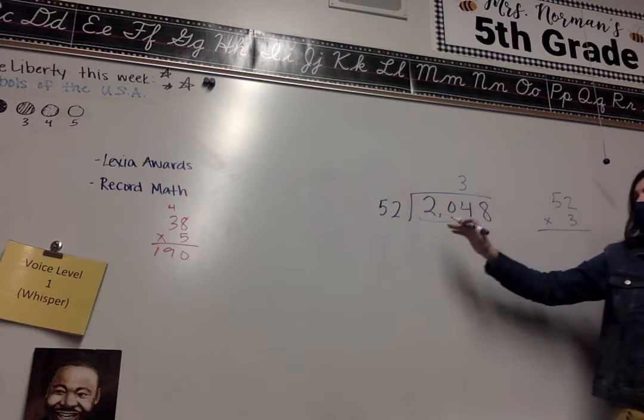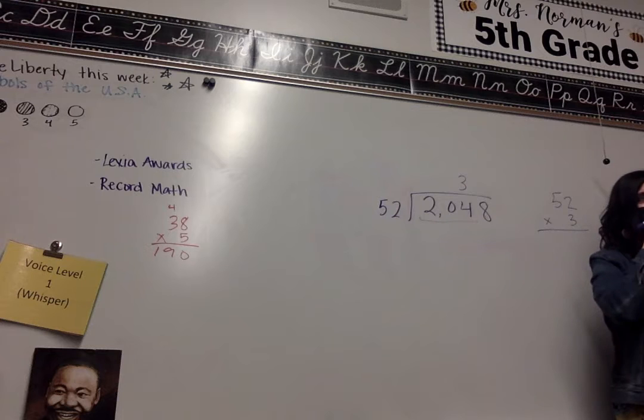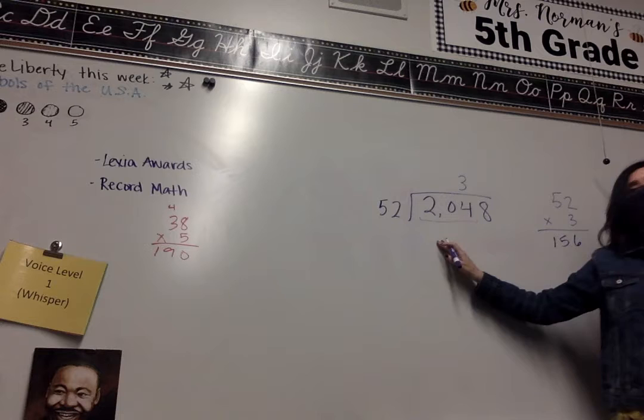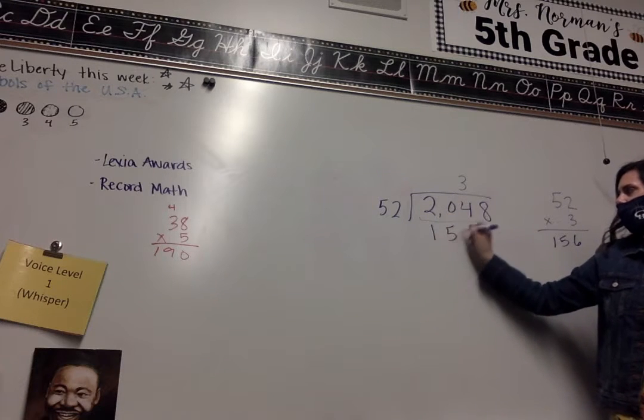We decided or we're guessing that 52 will go into 204 three times. We're going to try it out. So right here on the side, we're going to do our multiplication. What did you get, Kaylee? 156. Good, 156. Perfect. Thank you, my dear. So let's try that. So we'll say three times 52 is 156, and we will subtract.